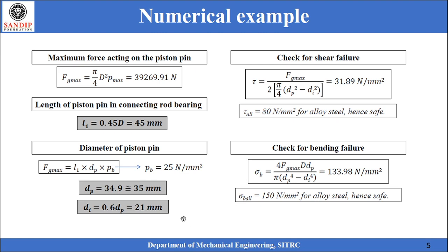We now check this design for shear and bending failure. Substituting values into the shear stress formula gives τ = 31.89 N/mm². For alloy steel, the allowable shear stress is 80 N/mm², which is higher than the induced stress, so the design is safe in shear. The induced bending stress is 133.98 N/mm². The allowable bending stress for alloy steel is 150 N/mm², which is also higher than the induced stress, confirming that the piston pin design is safe against bending failure as well.